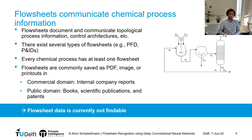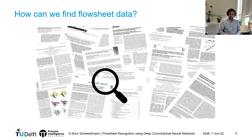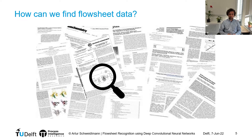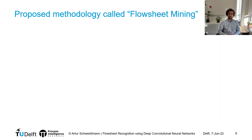However, these flowsheets are currently not findable. So the question is, how can we identify and find flowsheets in scientific publications? To give you a number, at the moment we have about 2.6 million new publications in science and engineering every year, so there's a vast space where these flowsheets are actually hidden. What I'd like to show you today is a methodology that we call flowsheet mining, that helps us to identify chemical process flowsheets from the literature.